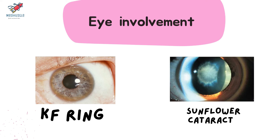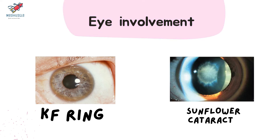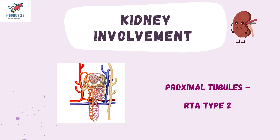The typical eye finding is the Kayser-Fleischer ring, known as the KF ring, seen at the periphery of the cornea. This KF ring is found in 50–60% of cases of hepatic Wilson's disease, while the prevalence in neuro-Wilson's is 90–95%. Another typical eye finding is the sunflower cataract. Functional damage can also occur at the kidneys, typically at the level of the proximal convoluted tubule, leading to renal tubular acidosis type 2, which can present as Fanconi syndrome.